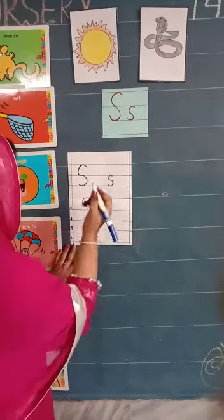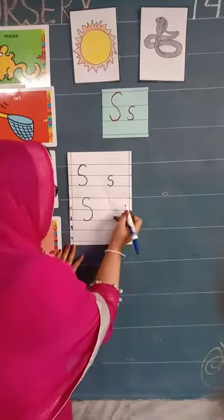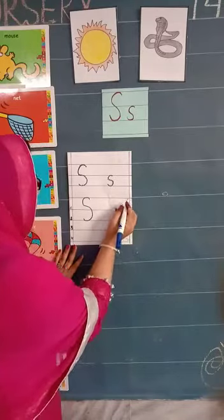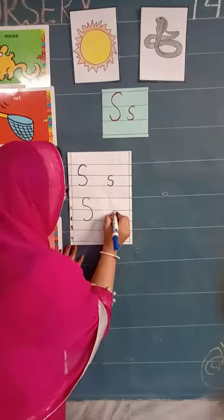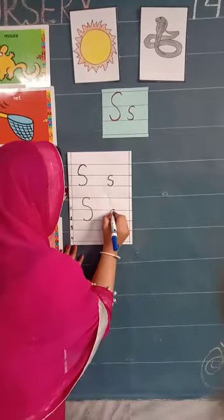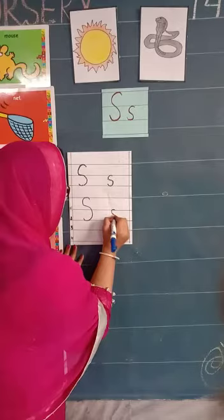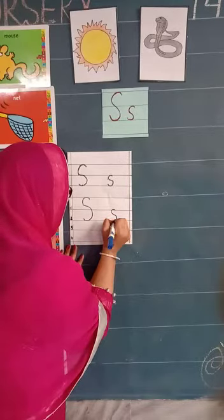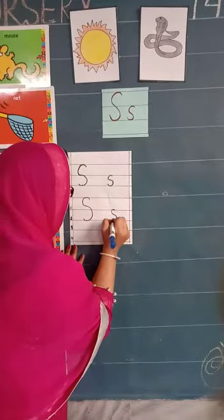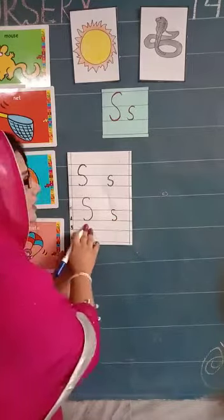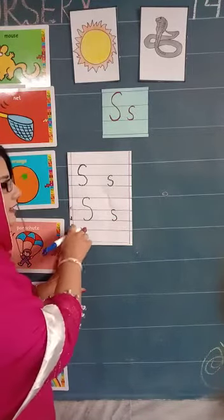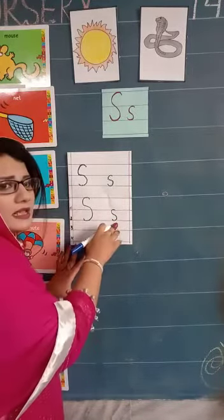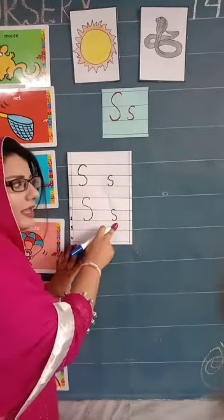And again how to write small s? Start up on the second line. Draw a semi circle again on the left side. And then up and touch. What is this? Capital S. And what is this? Small s.